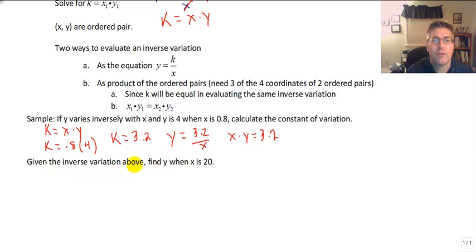So given the inverse variation above, find y when x is 20. Well there's a couple ways to do that. We can just use the equation. We know what x is. So we could say y equals 3.2 divided by 20. And y equals 0.16 or 16 hundredths.